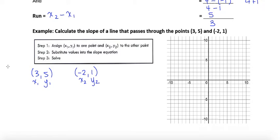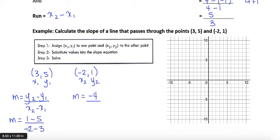Now we want to substitute the values into the slope equation. So we're going to use the slope is the same as y2 minus y1 over x2 minus x1. So that is going to be 1 take away 5 over negative 2 take away 3.